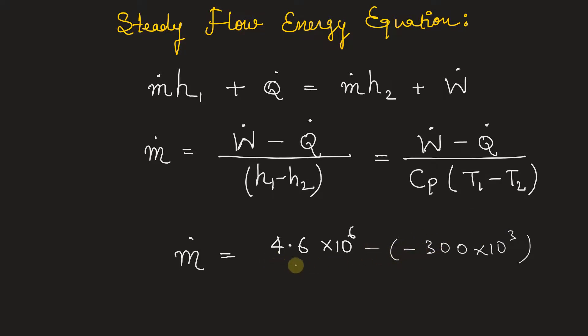So heat flow rate is negative, whole divided by Cp. In the problem given is 1000 multiplied by T1 is 1100 minus T2 that is 400.